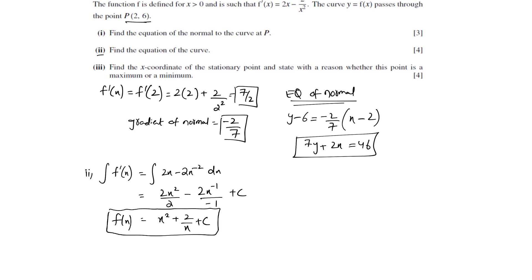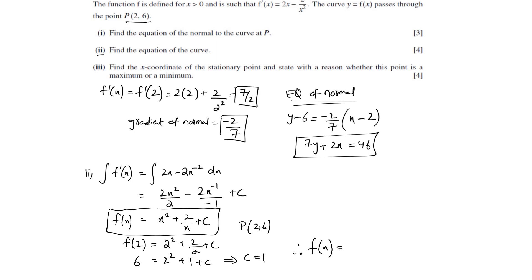You can find the value of c by plugging in the coordinates of P, which is (2, 6). So f of 2 would be 2 squared plus 2 over 2 plus c, and f of 2 is 6 because the coordinates were (2, 6). So c comes out to be 1. Therefore the function equation would be x squared plus 2 over x plus 1. That's the equation of the curve.